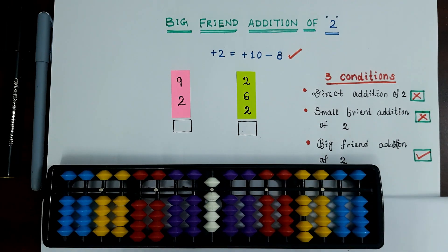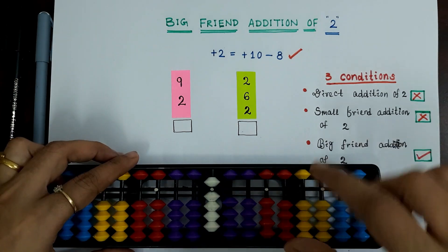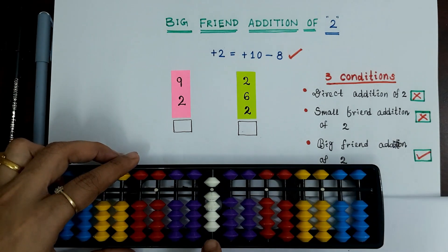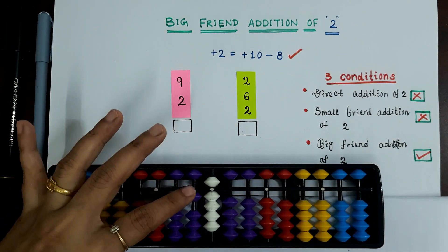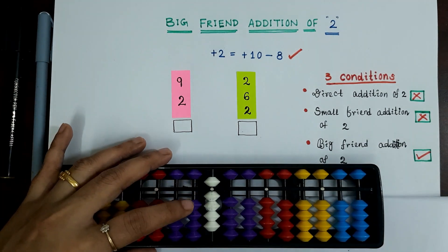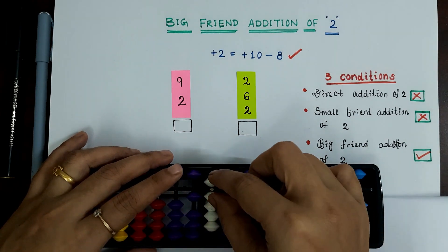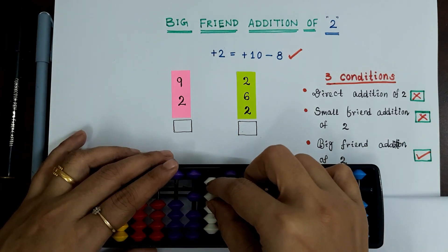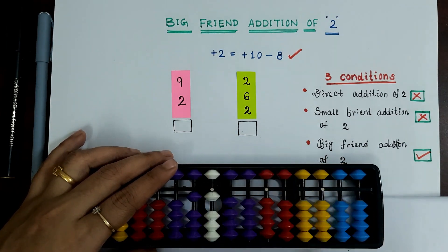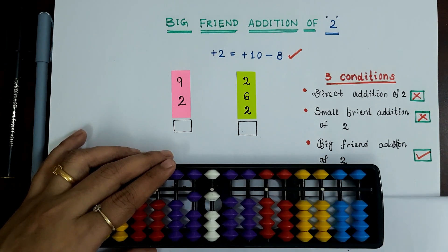So, 9 plus 2. Here I have loaded my bits for 9. So, 9 plus 2 is plus 10 minus 8. Answer is 11.